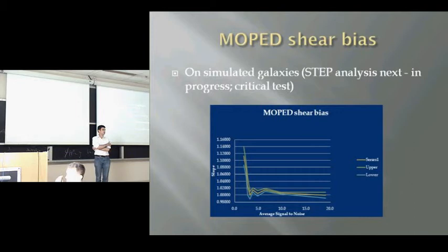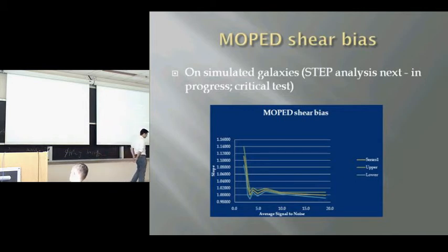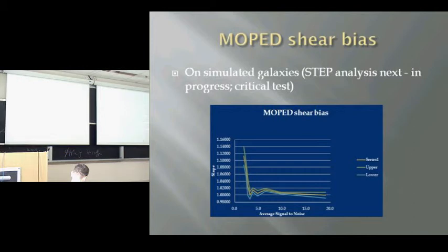How will MOPED cope with a varying PSF — does it need recomputation each time? There are a couple of ways to approach this: one can estimate the PSF in different regions of the images and then interpolate the MOPED coefficients, since it's an entirely linear process — that's equivalent to interpolating the PSF across the field. Alternatively, if the PSF can be parameterized with a set of parameters, you can pre-compute on a large multi-dimensional grid and store those coefficients.